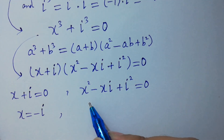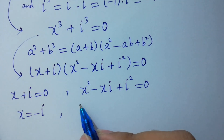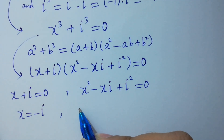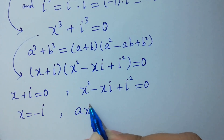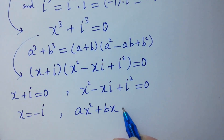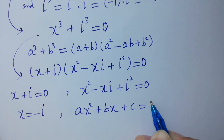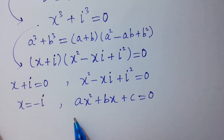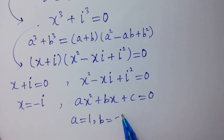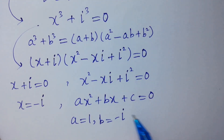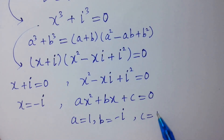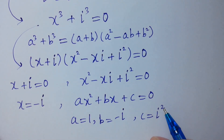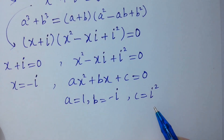The second factor is a quadratic equation of the form ax² + bx + c = 0. Comparing coefficients, a = 1, b = -i, and c = i² = -1.